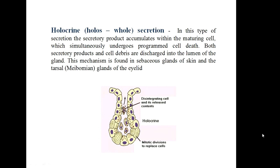In holocrine secretion, the secretory product accumulates within the maturing cell, which simultaneously undergoes programmed cell death. Both secretory products and cell debris are discharged into the lumen of the gland. This mechanism is found in sebaceous glands of the skin and the tarsal or Meibomian glands of the eyelid.